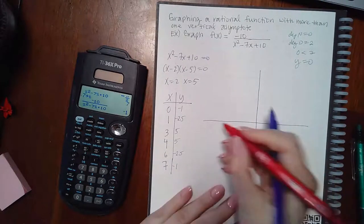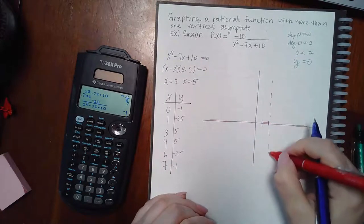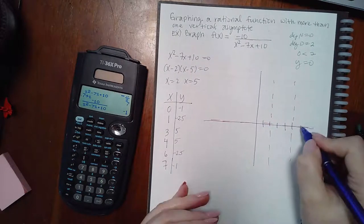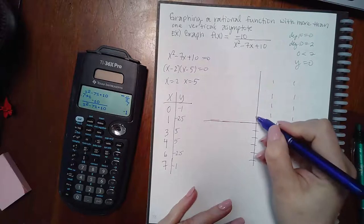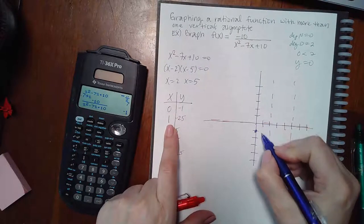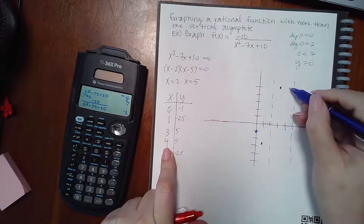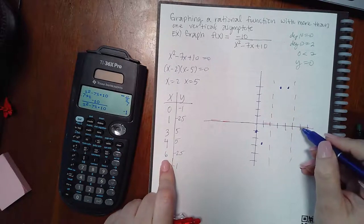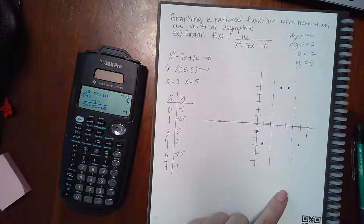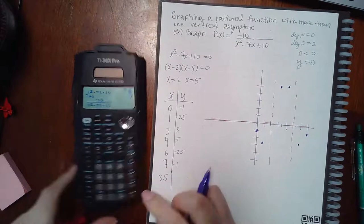Setting up the graph: horizontal asymptote at y = 0, vertical asymptotes at x = 2 and x = 5. Plotting the points: (0, -1), (1, -2.5), (3, -5), (4, 5), (6, -2.5), (7, -1). If the middle region looks unclear, plug in an extra value like x = 3.5.